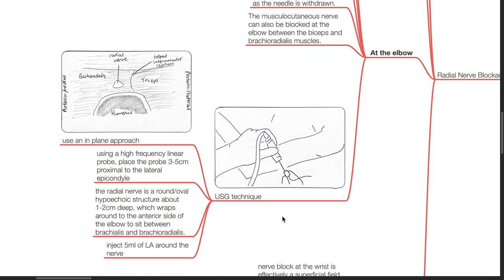Ultrasound technique. Use an in-plane approach using a high-frequency linear probe. Place the probe 3 to 5 cm proximal to the lateral epicondyle. The radial nerve is a round oval hypoechoic structure about 1 to 2 cm deep which wraps around to the anterior side of the elbow to sit between the brachialis and the brachioradialis. Inject 5 mL of local anesthetic around the nerve.